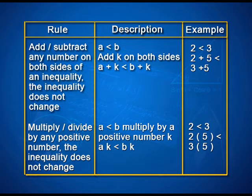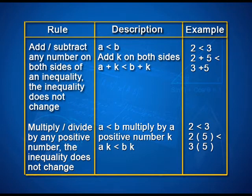The second rule says if we multiply or divide by any positive number, the inequality does not change. That is, if a is less than b and we multiply by a positive number k, then a into k is less than b into k. For example, 2 less than 3 implies 2 into 5 is less than 3 into 5.